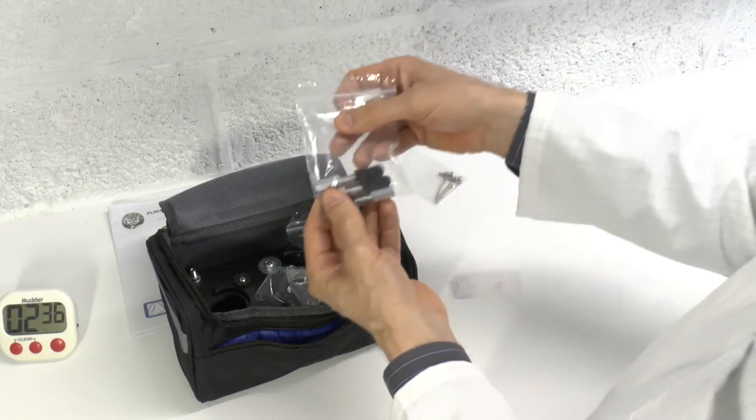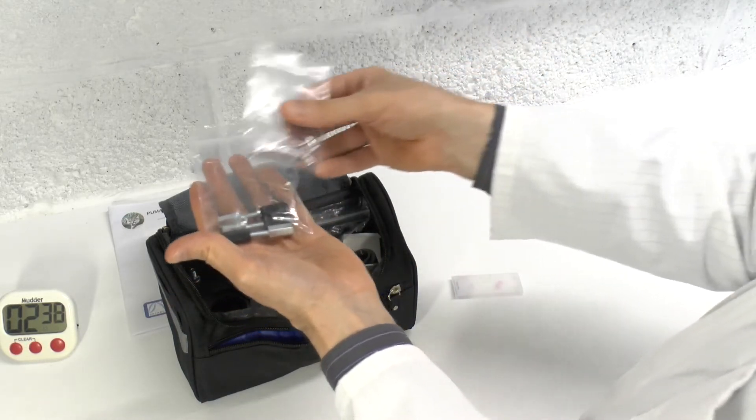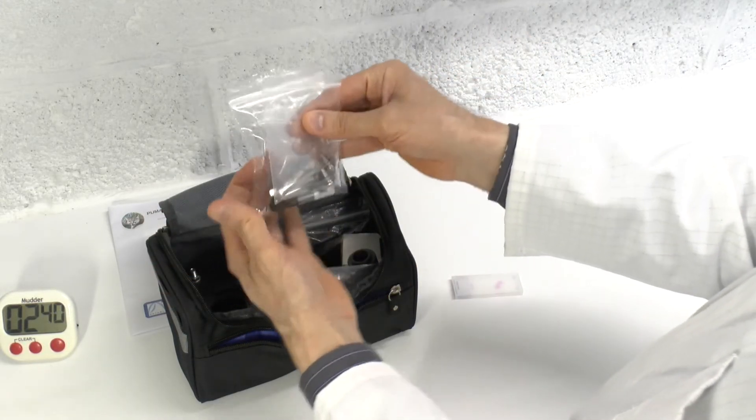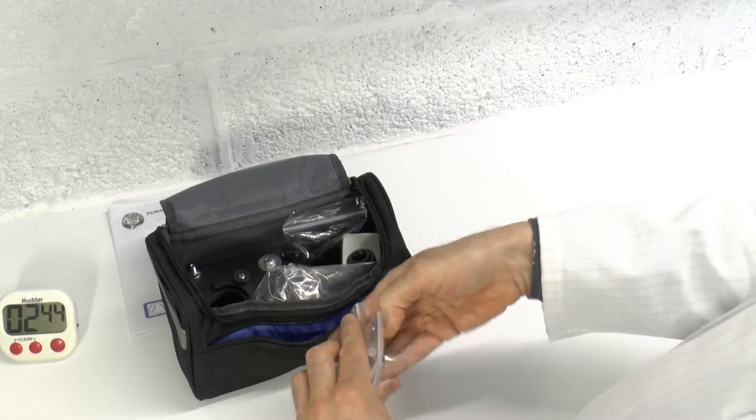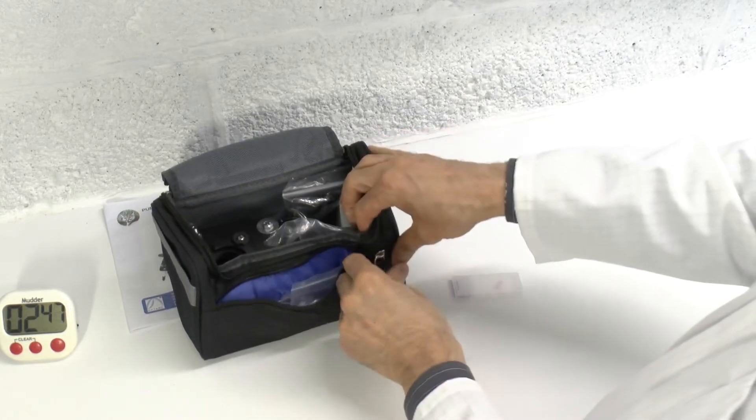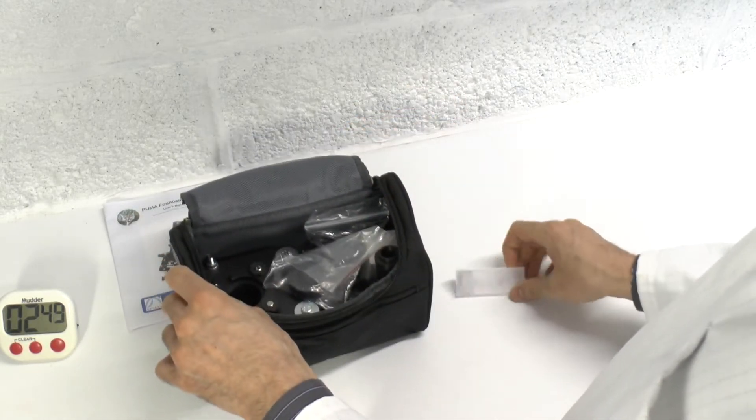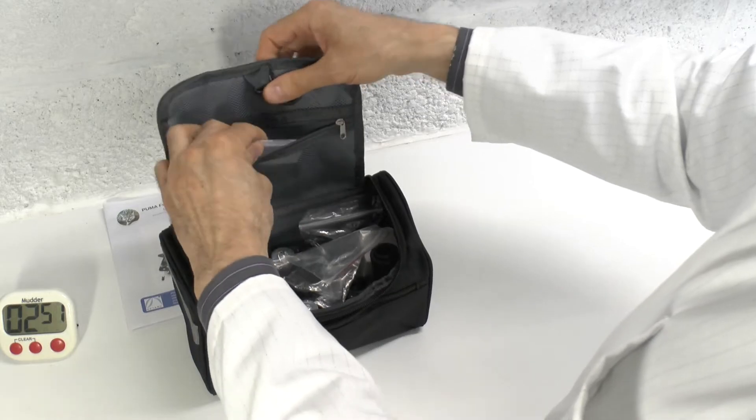I recommend you keep all the metal parts in a separate compartment of the bag to prevent them from scratching or damaging the other components. We could use the front compartment here and keep the slide at the top.